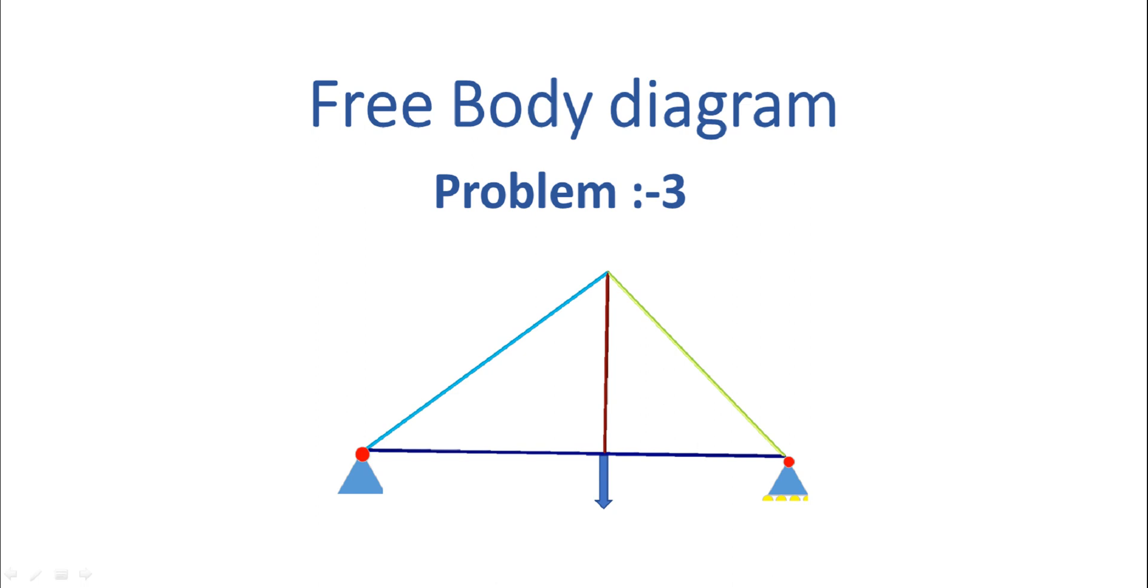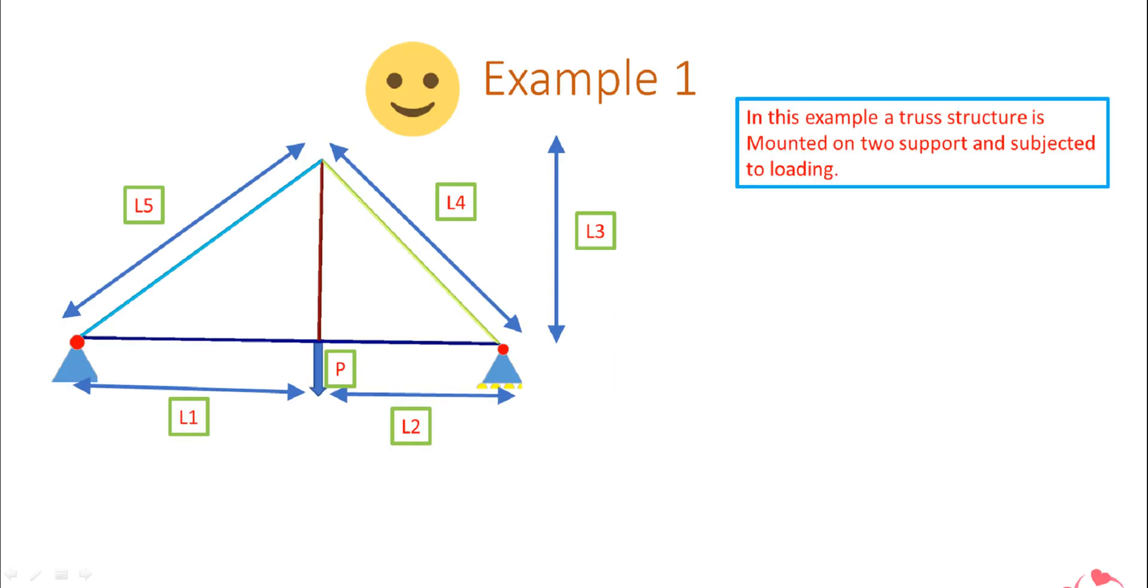We will start by analyzing the structure. Let's investigate the problem. This is a truss member which is subjected to a load at some location offset from the center. You can say that P is acting at a distance of L1 from one end and L2 from the other end, but L1 is not equal to L2.